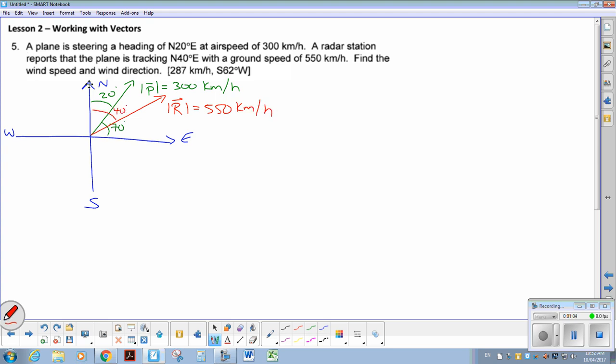So obviously the wind's pushing it since it's going faster. It was 40 degrees, but I actually want to use 50 degrees, because you always want the angle with the x-axis. We know that our resultant is always our plane vector plus wind vector. I want to isolate or find the wind vector. So subtracting P from both sides, my wind vector is the resultant minus the plane.